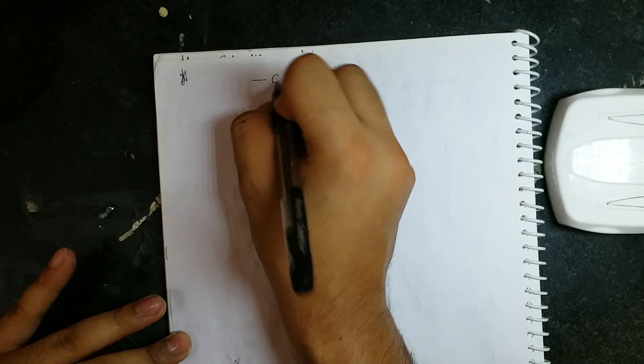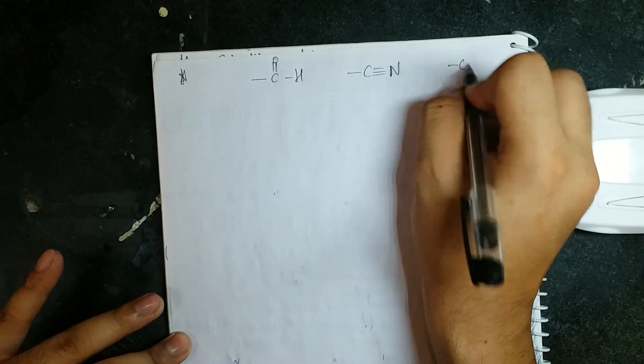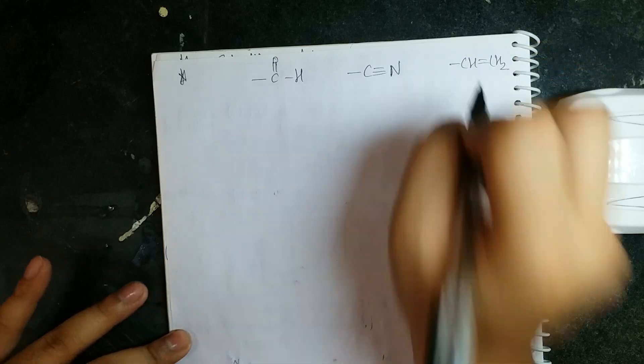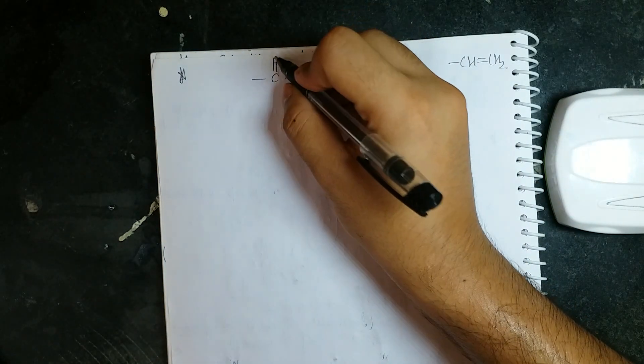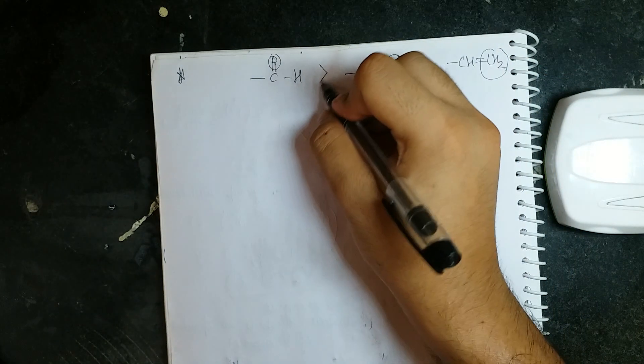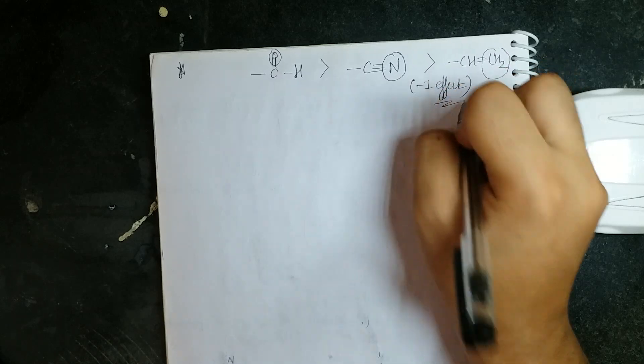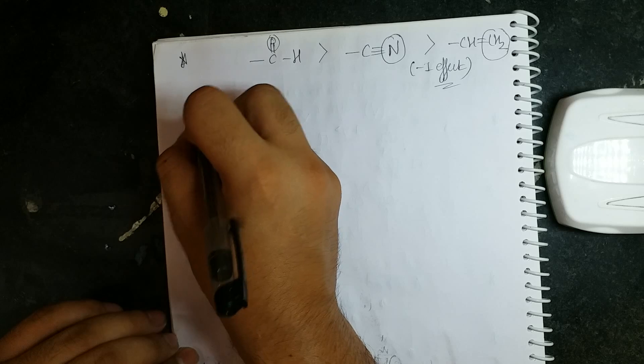Next point: minus I effect based on electronegativity of the atom. Compare an aldehyde group, a cyanide group, and an alkene. Oxygen is more electronegative than nitrogen, which is more electronegative than carbon. Therefore the aldehyde group shows the greatest minus I effect.